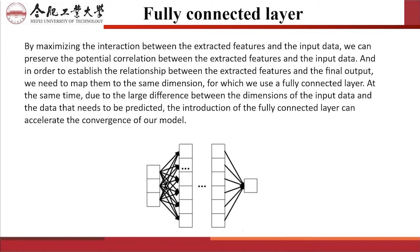By maximizing the interaction between the extracted features and the input data, we can preserve the potential correlation between the extracted features and the input data. In order to establish the relationship between the extracted features and the final output, we need to map them to the same dimension, for which we use a fully connected layer. At the same time, due to the large difference between the dimensions of the input data and the data that needs to be predicted, the introduction of the fully connected layer can accelerate the convergence of our module.